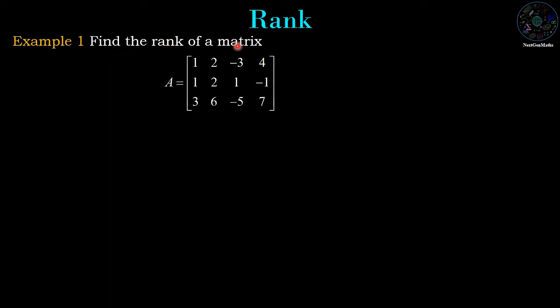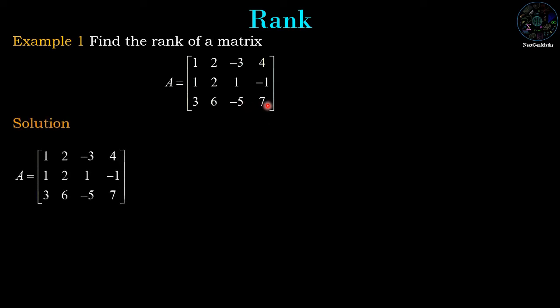Example: find the rank of matrix A, which is: row 1: 1, 2, -3, 4; row 2: 1, 2, 1, -1; row 3: 3, 6, -5, 7. To find the rank, we first convert matrix A into its row echelon form.